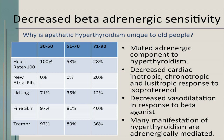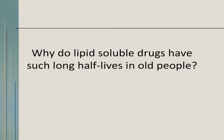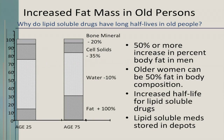Why do lipid-soluble drugs have such long half-lives in older people? Fat mass increases in older patients. Looking at body composition comparing a 25-year-old to a 75-year-old, you see that fat content increases — there's a 50% or more increase in body fat in men and also in women. There's an increased half-life for lipid-soluble drugs, so now that there's more fat, they're going to stick around longer and can actually be stored in the body.